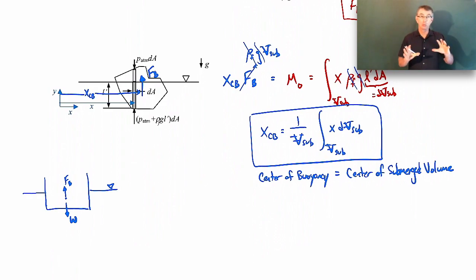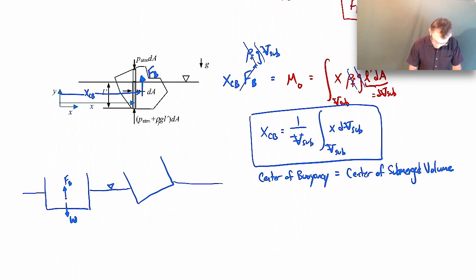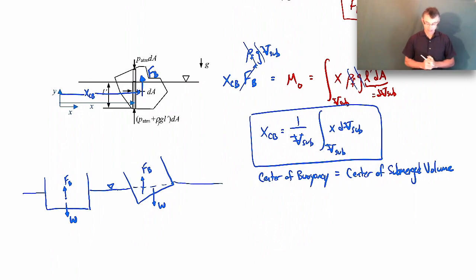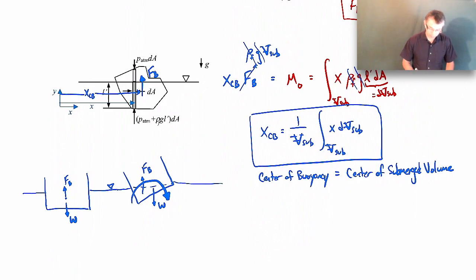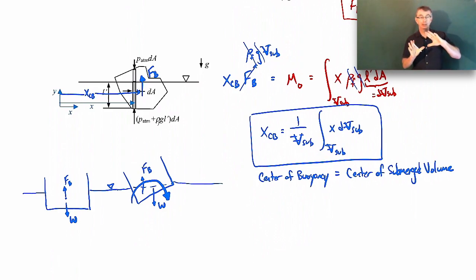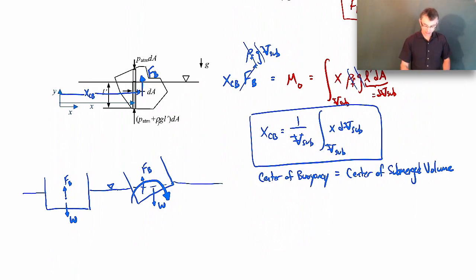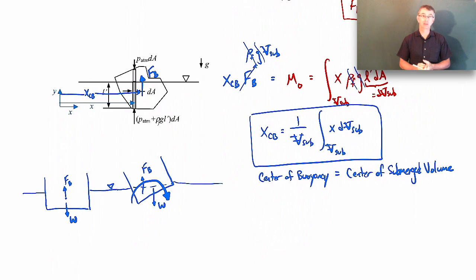Now let's say the wind blows on the side of the ship and tilts it. When the ship tilts, the center of mass stays in the same place but the center of buoyancy shifts to the new center of submerged volume. In that situation we have a restoring moment — a moment that wants to turn the ship back to its original position. So that configuration is stable. If the ship is perturbed one way or the other, the resulting buoyant force and weight act to bring it back. This is why we put ballast in the bottom of ships — to get the center of mass well below the center of buoyancy for stability.